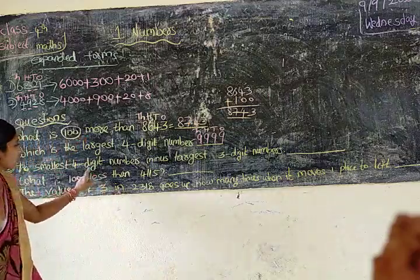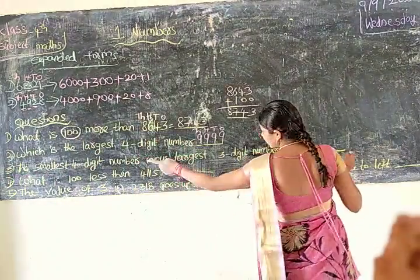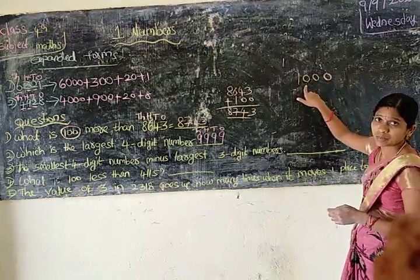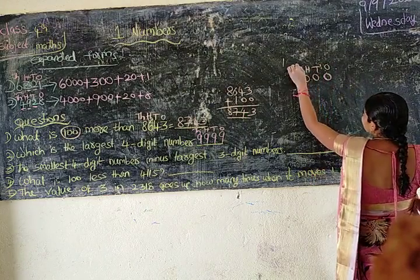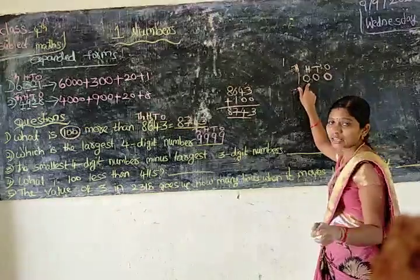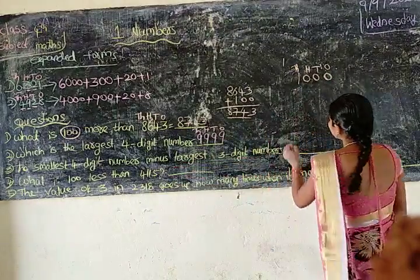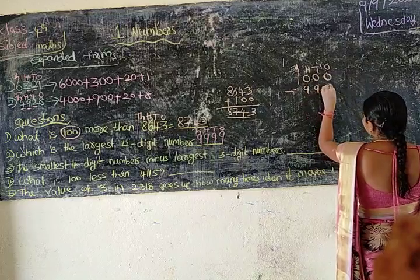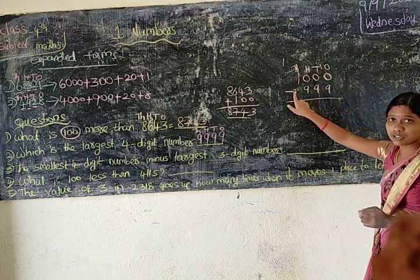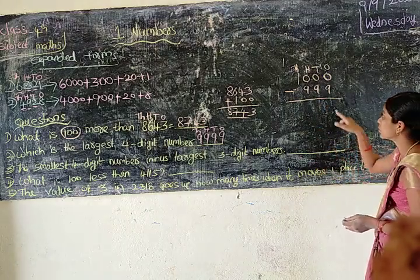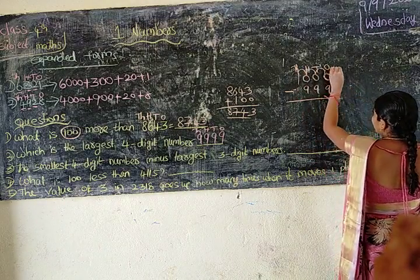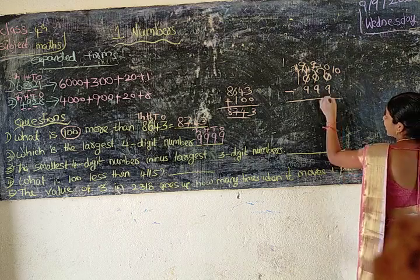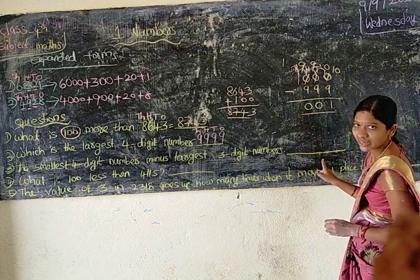Next: the smallest four-digit number minus the largest three-digit number. The smallest four-digit number is one thousand. The largest three-digit number is nine hundred and ninety-nine. One thousand minus nine hundred and ninety-nine: zero minus nine is not possible, so we borrow. Ten minus nine is one, nine minus nine is zero, nine minus nine is zero. So the answer is one.